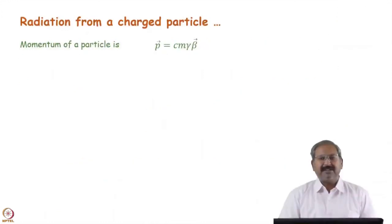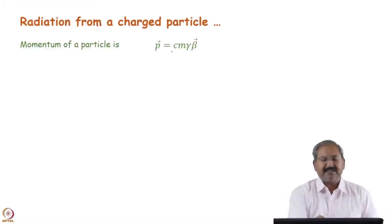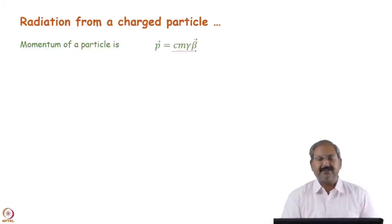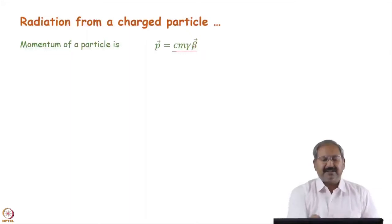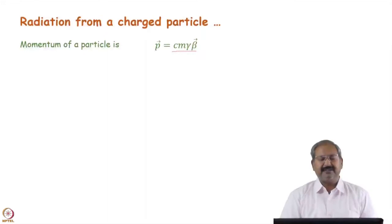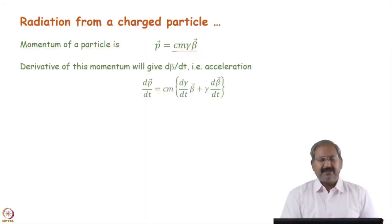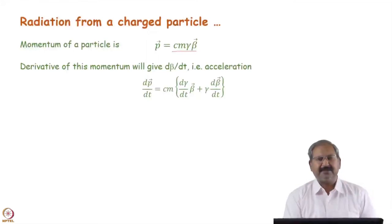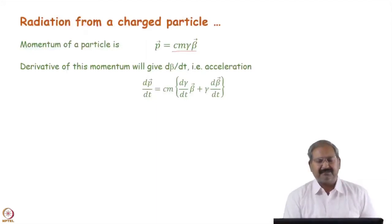The momentum of the particle is given by mc·gamma·beta — this is the relativistic momentum — where beta·c is the velocity and m·gamma is the relativistic mass. If we take the derivative of this momentum, we will get d_beta/dt as well. From Newtonian mechanics, dp/dt gives the force, and force is directly proportional to acceleration, so we will get the acceleration using this relation.